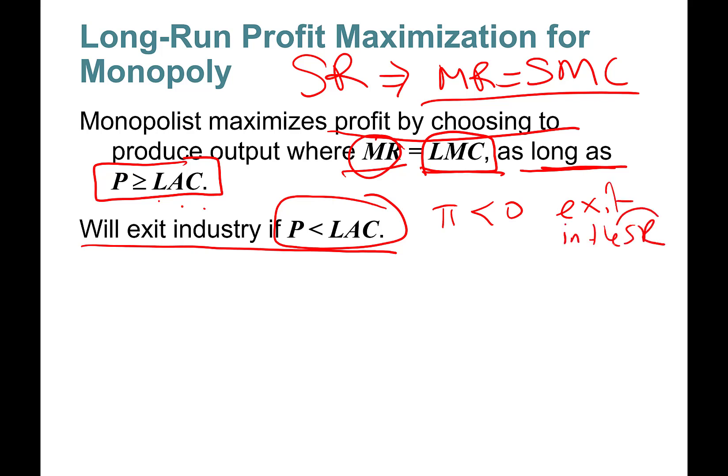In the short run you can hang in there because you have fixed costs, maybe you will stay in the short run. But in the long run you have to exit. Being a monopolist doesn't mean that you are going to make positive economic profits.